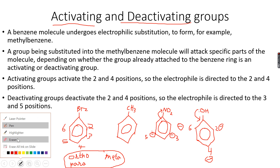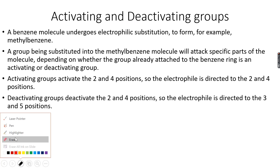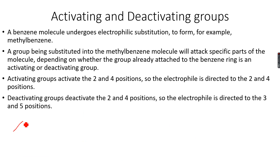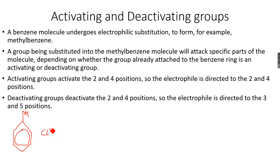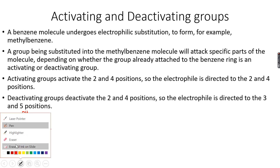Now let's do an example of electrophilic substitution — one with an activating group and one with a deactivating group. Let's begin with phenol. I have my phenol and I want to add a chlorine to it as an example. Phenol is a very stable benzene molecule with an OH group attached. I have my Cl⁺ ion, created with the AlCl₃ catalyst. Since OH is an activating group, I can only attack at the two, four, or six positions — for example, I attack from the two position.